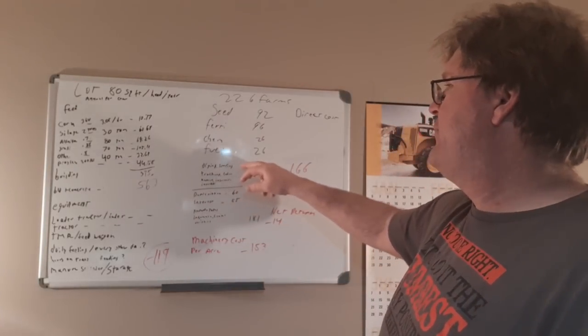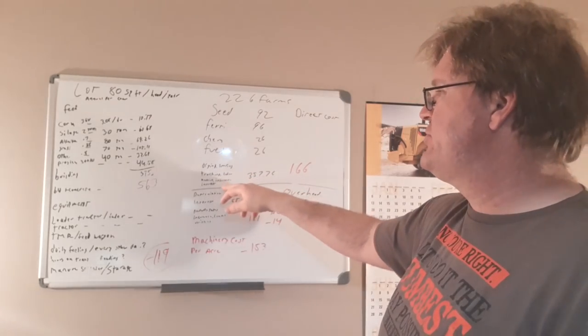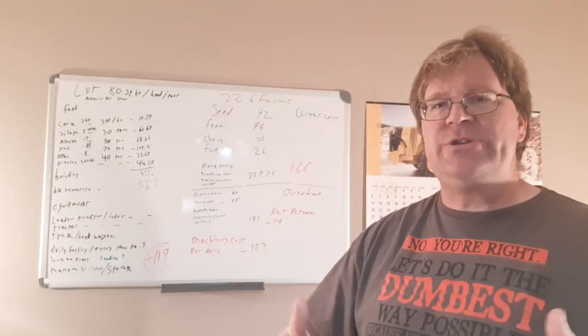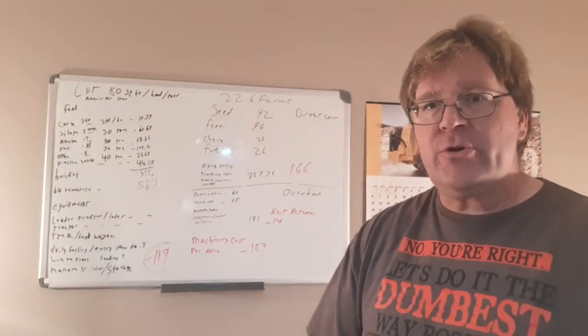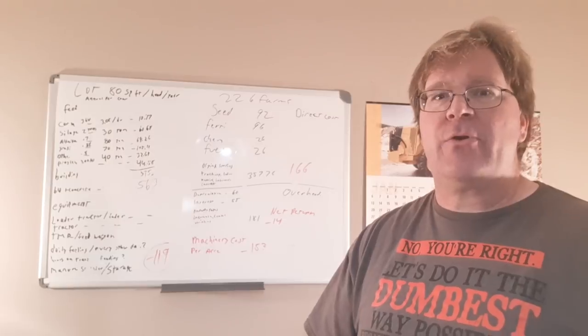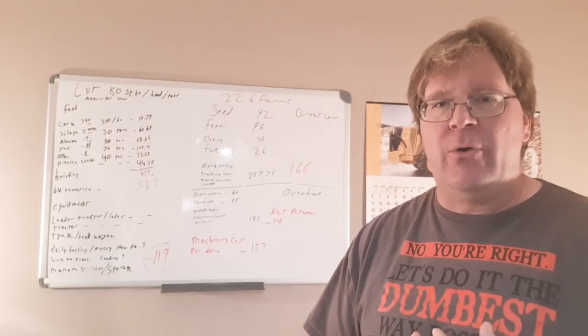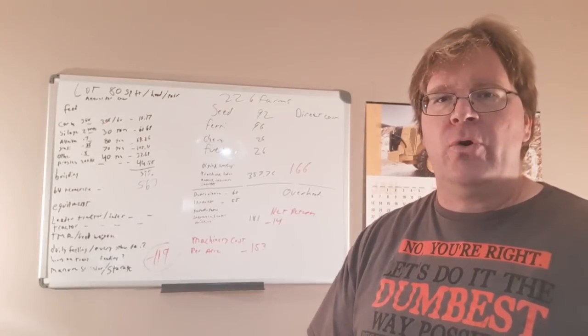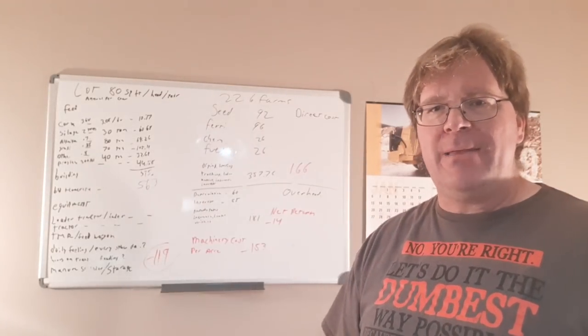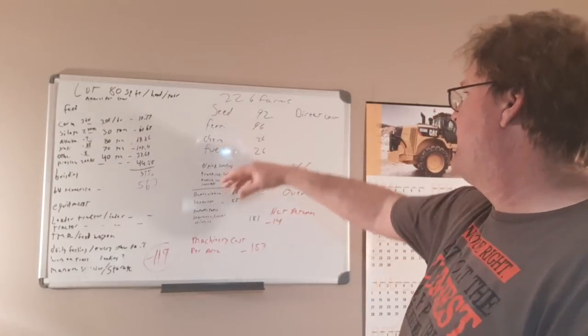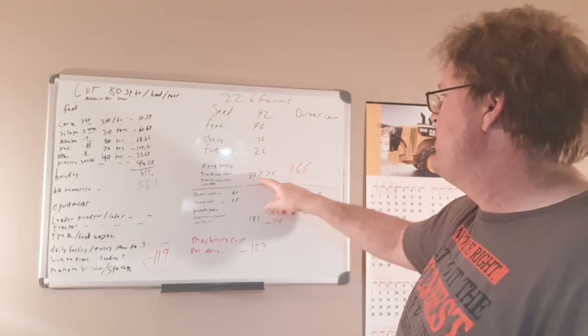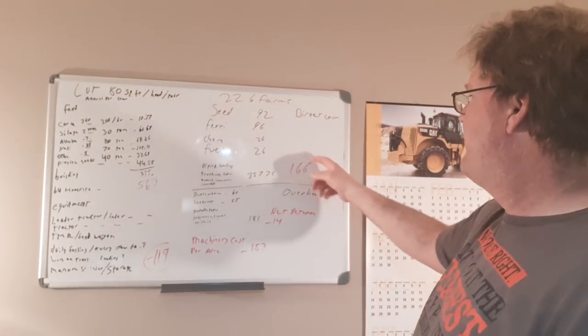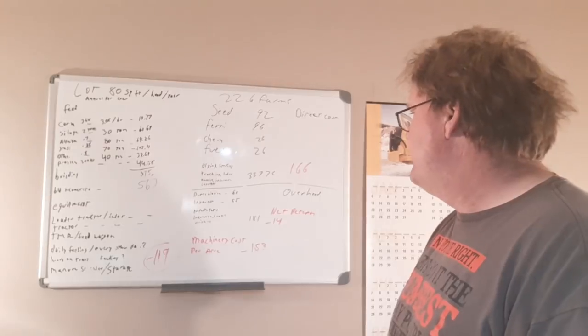So by the time you figure in drying, storing, trucking, labor, repairs, insurance, and interest, all your direct costs, anything associated with putting the crop in, maintaining the crop and getting the crop out, paying for the combine to go through the corn but not paying the combine payment kind of deal, all that stuff comes up to $357, basically a $360 an acre cost for a $166 return.